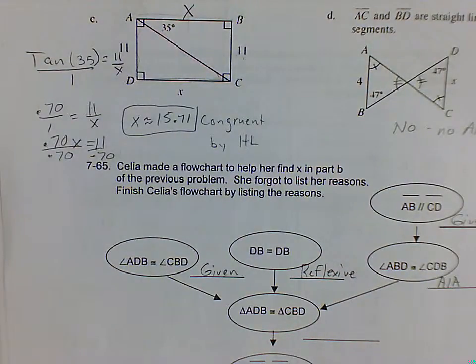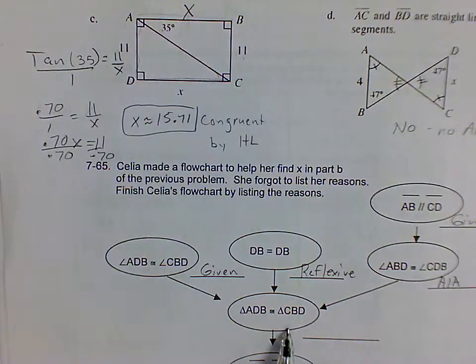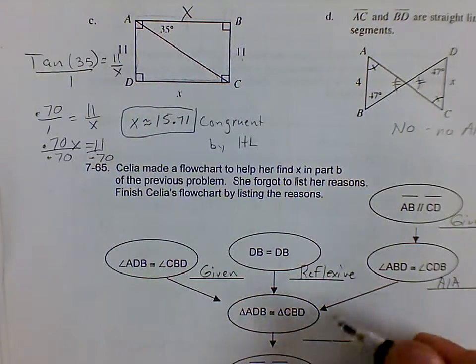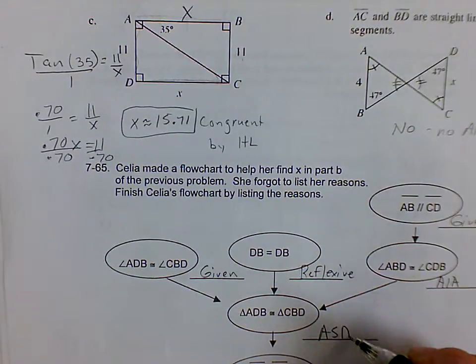And so the last thing here is ADB is congruent to CBD. So how do we know that? That's going to be angle, side, angle. We already wrote that down up above.